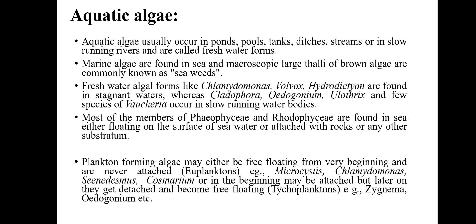What are the examples of freshwater forms? Chlamydomonas, Volvox, Hydrodictyon, etc. Some are present in stagnant, that means still water — for example, Cladophora, Oedogonium, and Ulothrix. Some are present in slow running water — for example, Vaucheria.